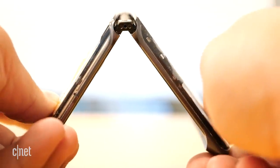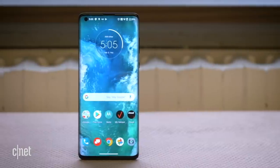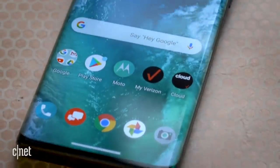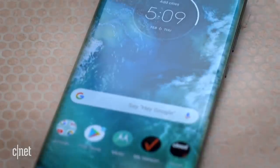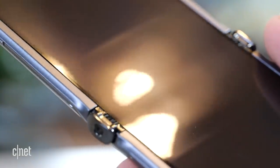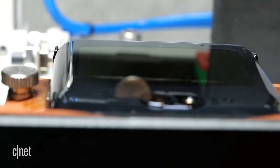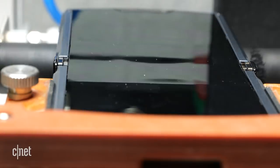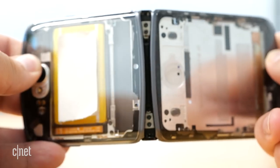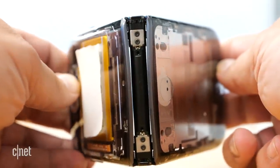To give you a sense of how thin that is, the Motorola Edge Plus uses a similar OLED panel for its curved edges. The Razr's display stack is a third of the thickness of the one found on the Edge Plus. And remember, it's not just the display that's folding in half. There are a number of connections, including ones for the new 5G antennas that have to traverse the hinge.